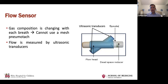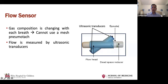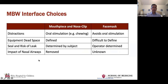A word about the flow sensor: you can't use mesh pneumotachs because a pneumotach works by measuring pressure drop across a fixed resistance — based on Poiseuille's law, which has a density element. That works fine if you're breathing in and out the same gas throughout the maneuver, like with spirometry. But in MBW, gas composition is changing with each breath, so you can't use a pneumotach. The Echomedics and all these devices use ultrasonic transducers to measure flow, with one at each end.